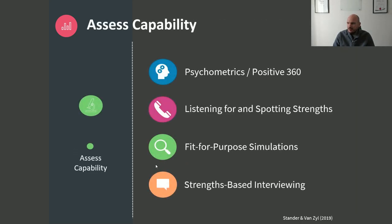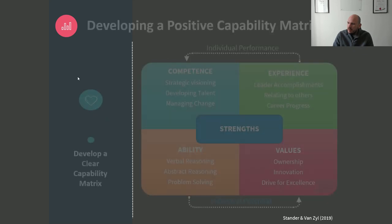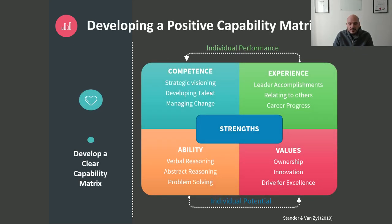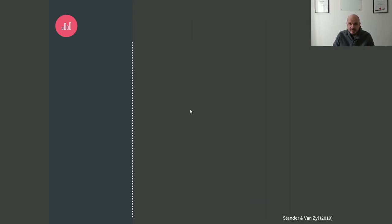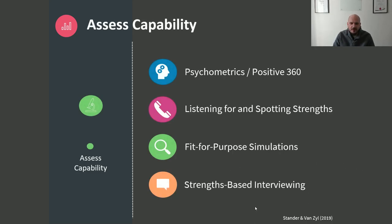So how do we get this information? We get it through psychometrics, strength spotting, and listening for strengths while interviewing. We generate what we call fit-for-purpose simulations — activities centered around the things we want to assess. For example, if we want to assess talent development, we can design a role play where I'm a client and you're my coach or manager, and I come to you saying I'm having trouble with my team. So we develop a very structured simulation to assess these capabilities. And of course, we also have a strengths-based interview.